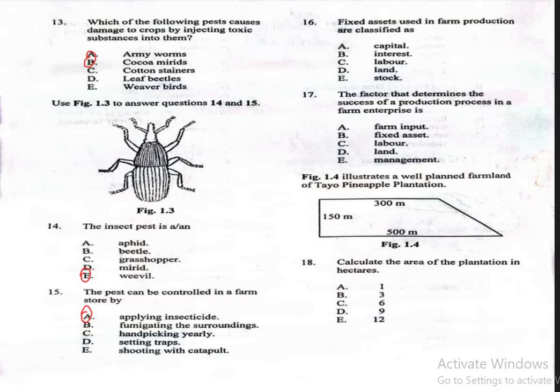Question 16. Fixed assets used in farm production are classified as: A. Capital, B. Interest, C. Labor, D. Land, E. Stock. The correct answer is land, which is option D. Fixed assets include land, buildings, and equipment used over the long term in production.